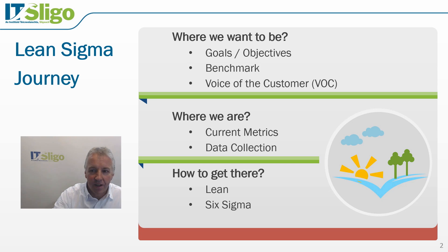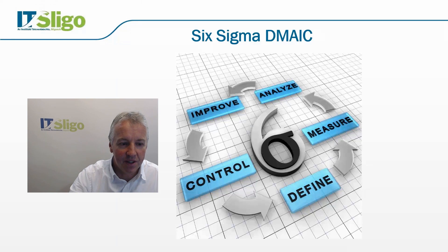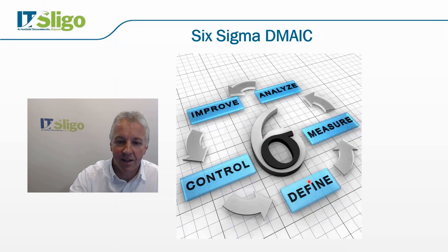DMAIC — Define, Measure, Analyze, Improve, Control — is a methodology and roadmap used for problem solving and process/product improvement. You walk through each phase: starting with define, then measure, analyze, improve, control. It's shown as a circular path, but it's actually an iterative process. You might define, then measure, then define a bit more, move to analyze, and find you need to measure more. So don't take it as a strict linear path where each phase is finished before moving on.